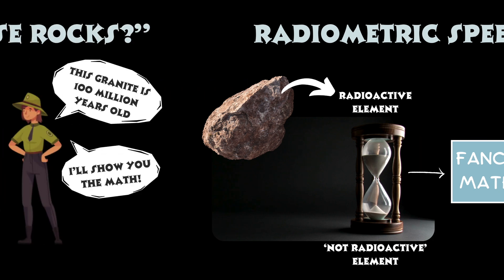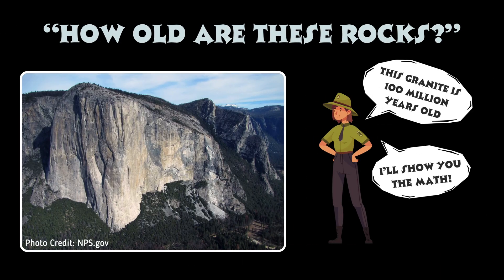So instead, my goal is that by the end of level 1, you'll not only understand how radiometric dating works in principle, but you'll be able to calculate the age of a specific rock from the original lab data using nothing more than the calculator on your phone. The first prerequisite is to understand the difference between elements, ions, and isotopes.